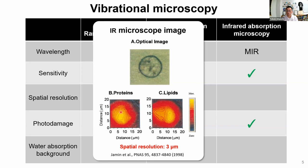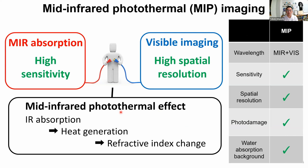Recently, many people including us have started developing mid-infrared photothermal imaging. Here we combine mid-infrared absorption with visible imaging to get a higher spatial resolution determined by the visible light. The idea is simple: we illuminate infrared light onto the sample. If molecules resonant with the IR light exist, they absorb the IR light, heat is generated, and this slight temperature change leads to a refractive index change, which we can then visualize with visible light.